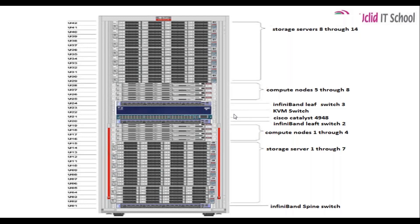There is no need to worry about memorizing all this ordering — just be aware of it. In case required, you can use this knowledge to locate all the components inside the rack. More than us, the hardware team needs to know this, as they are responsible for hardware replacement and management. If a server, disk, or switch fails, the hardware team comes into the data center and replaces the failed part.